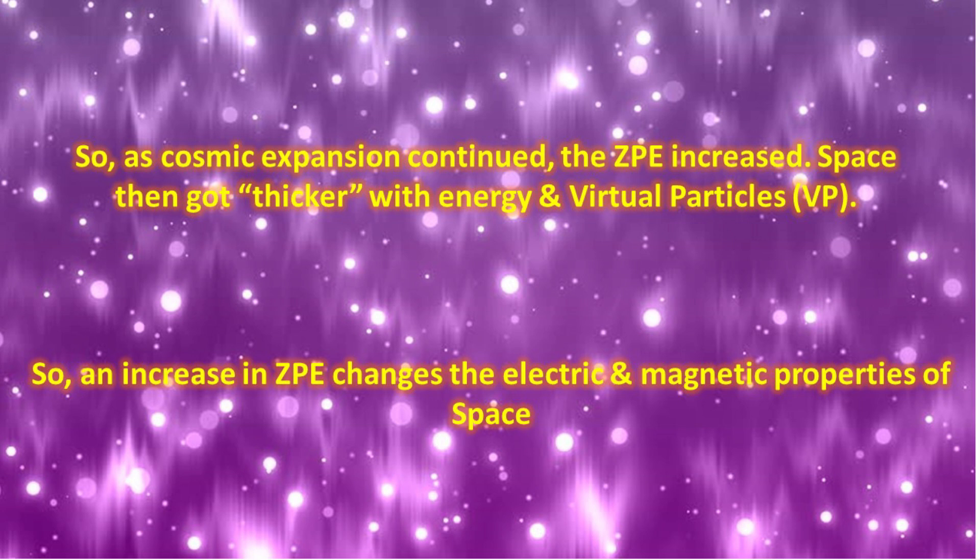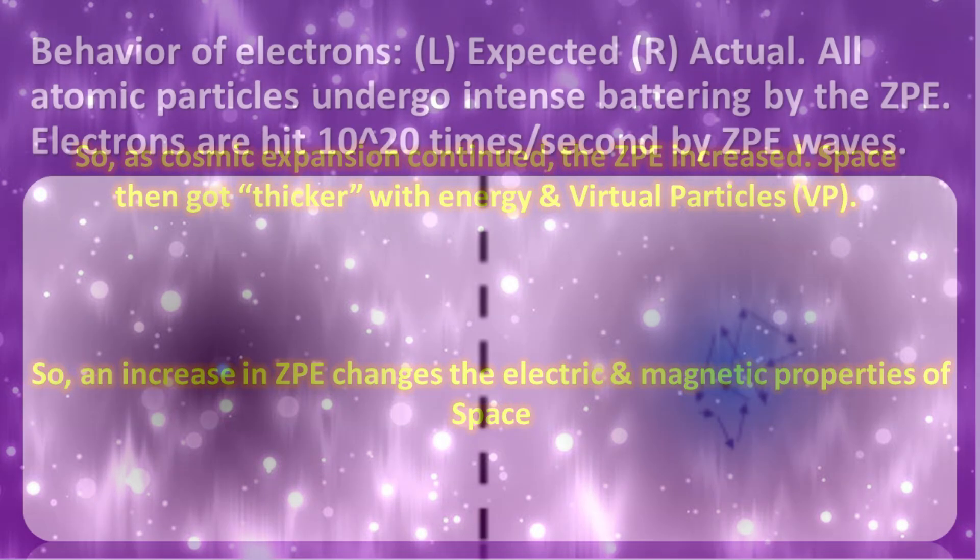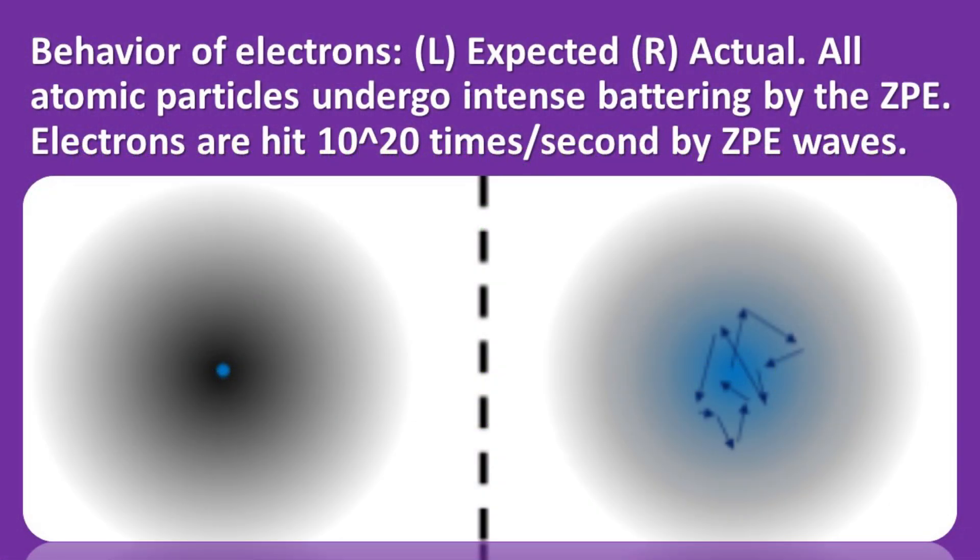This has a number of trails which lead to interesting conclusions. But for our purposes here, we need to know how much the ZPE has increased since the origin of the cosmos. We get this information from subatomic particles like electrons. Here are two pictures of the behaviour of electrons. The one on the left was what was expected historically. However, the one on the right is what we found actually occurred. Because of the extremely high numbers of very short wavelength ZPE waves, all atomic particles undergo intense battering by the ZPE.